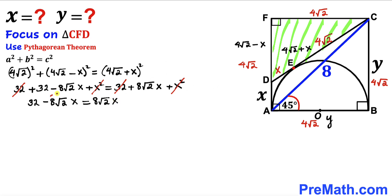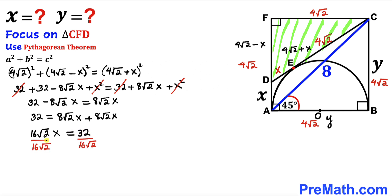Moving the term to the right side: 32 = 8√2·X + 8√2·X. Combining like terms: 32 = 16√2·X. Dividing both sides by 16√2: X = 32 / (16√2) = 2 / √2.